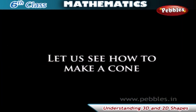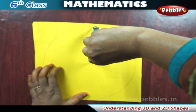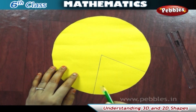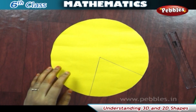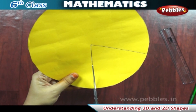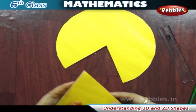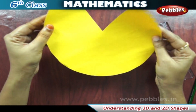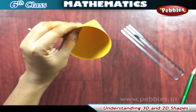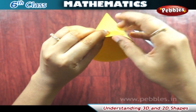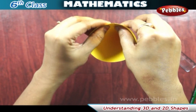Let us see how to make a cone. Draw a circle on thick paper using a compass. Then draw two lines from the center to the circumference. Cut out one section with scissors. Now join the ends OA and OB with adhesive tape, and your cone cap is ready. You can decorate it as you wish. In this way we can make a cone from paper.